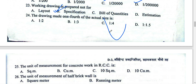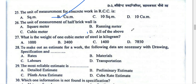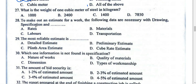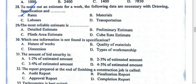The unit of measurement for concrete work (RCC) is cubic meters. Question 26: the unit of measurement for a half-brick wall. The weight of 1 cubic meter of steel is 7850 kg (density = 7850 kg/m³), so the answer is D. To make an estimate for a work, the necessary data are drawings, specifications, and rates. The most reliable estimate is the detailed estimate.